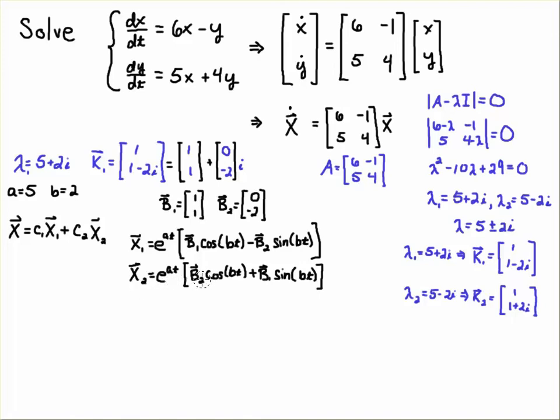So you have the vector b1 cosine bt minus—very important to get these signs correct—b2 sine bt. Then x2 will be e to the at, then you'll have capital b2, you'll see you have the imaginary part and that's positive, there's no minus sign there now. So see the difference in the signs: cosine bt plus b1 sine bt. So you kind of get this crisscross, you know, b1's are diagonal from each other, b2's are... sometimes your instructor may say just give me the components here.